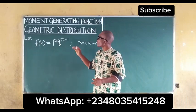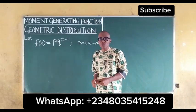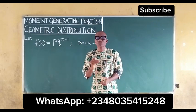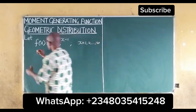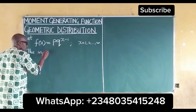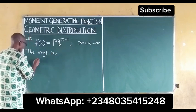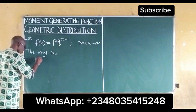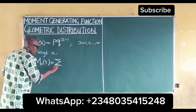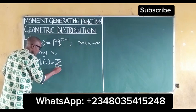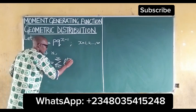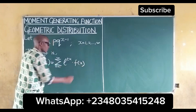In this video we are going to derive the moment generating function for the geometric distribution. The moment generating function is given as M_X(t) equal to the summation of e^(tx) multiplied by f(x), with x ranging from 1 to infinity.